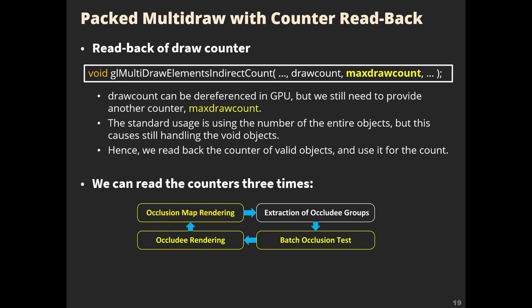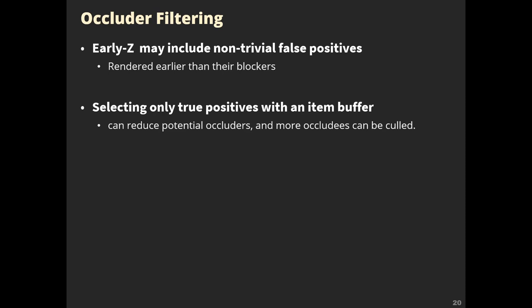We can read the counters at three points: batch occlusion tests, occludee rendering, and occlusion map rendering. The other technique is occluder filtering. In our algorithm, the topology selects occluders for temporal coherence; however, it inherently includes non-trivial false positives, as invisible objects rendered earlier than their blockers can be classified as falsely visible. To select pure true positives, we use an ID buffer technique. While rendering real geometries for occluders and occludees, we write their indices to the ID buffer, so we can select only true positives. This reduces potential occluders, allowing more occludees to be culled.